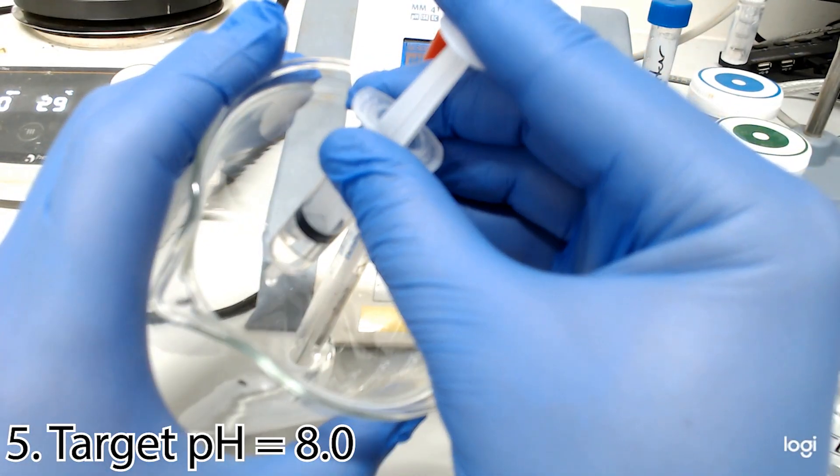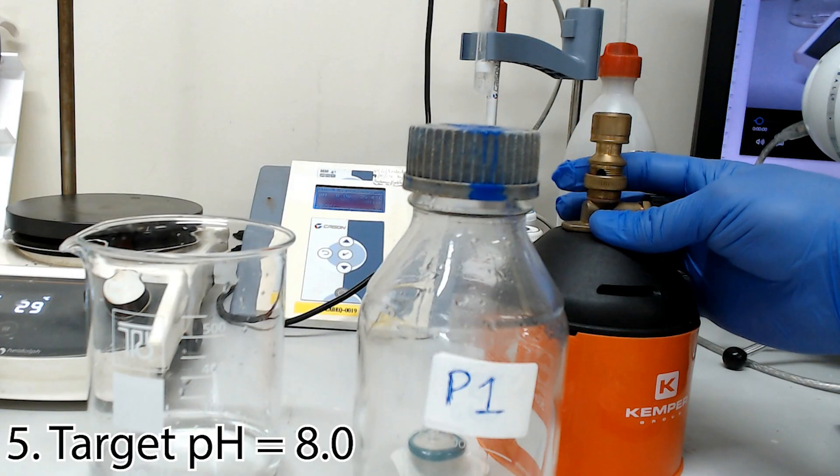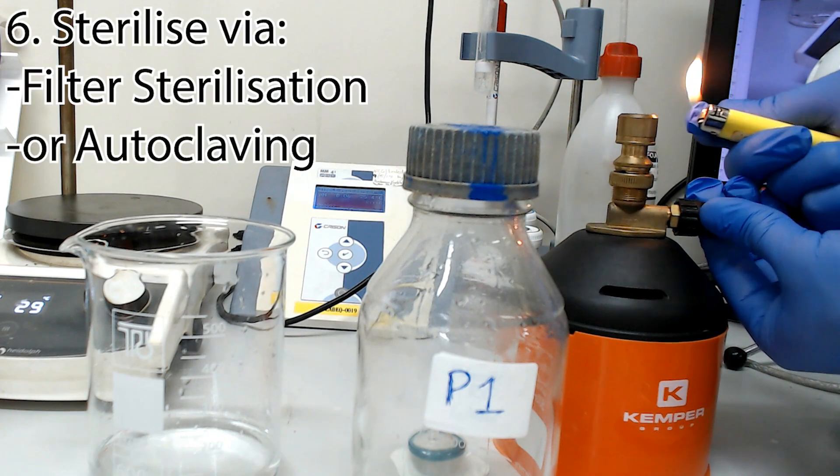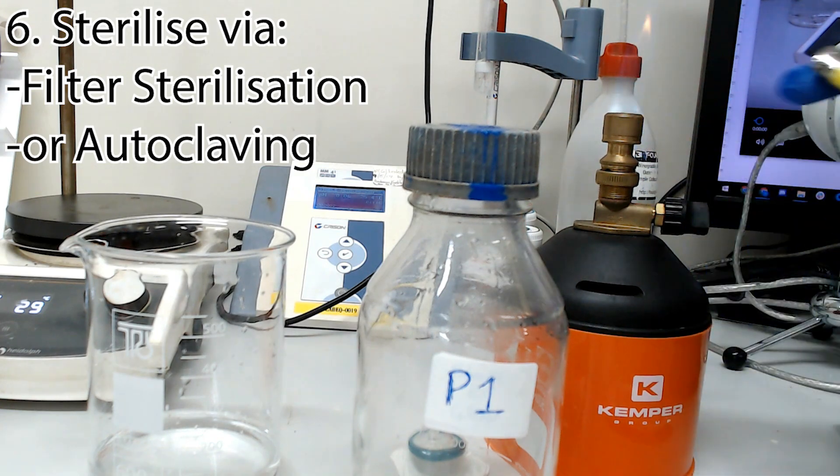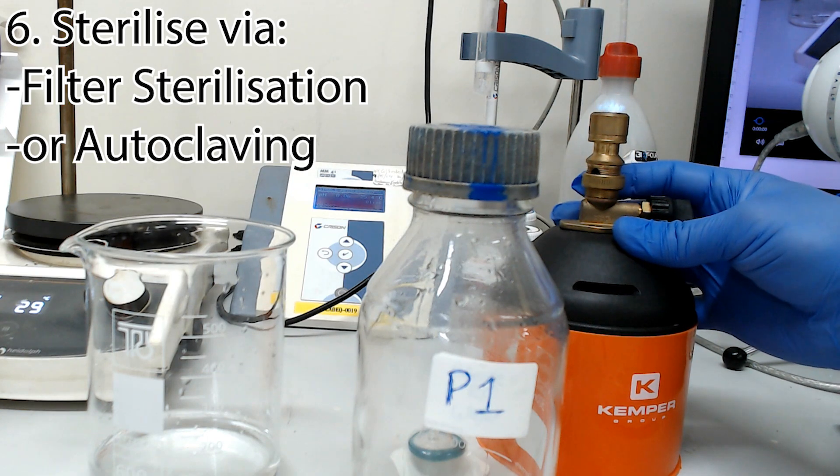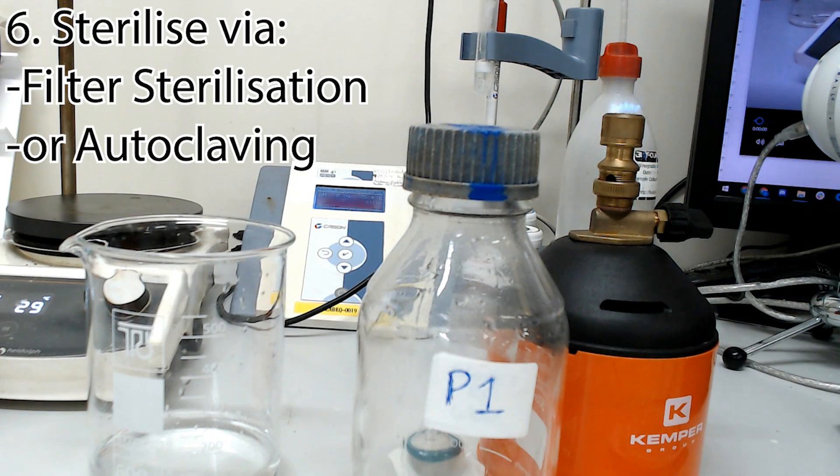Now, bring your solution up to its final volume using the graduation on the beaker as your guide. Once you're satisfied with the pH of your final volume, you're going to need to sterilize the solution. You can do this by simply autoclaving, but you also have the option to filter sterilize the solution. You can do this in a laminar flow hood, but a Bunsen is just as effective for maintaining a sterile workspace. Spray down the area with ethanol, and be careful around that flame with your gloves.